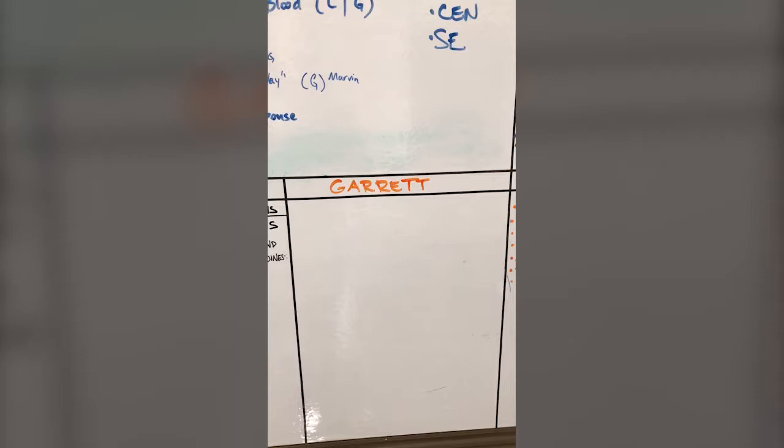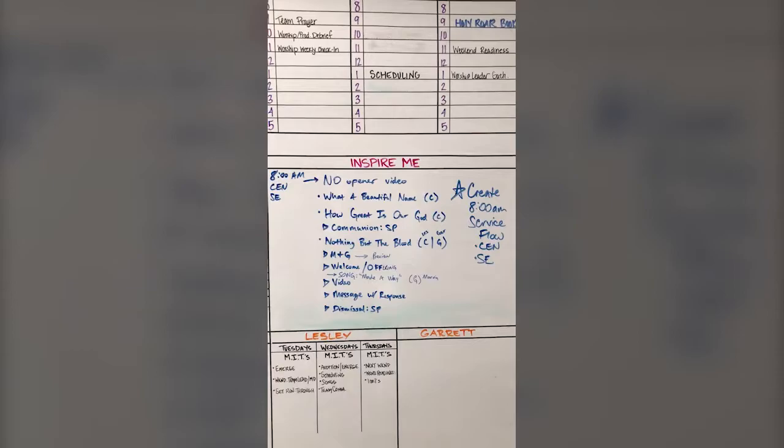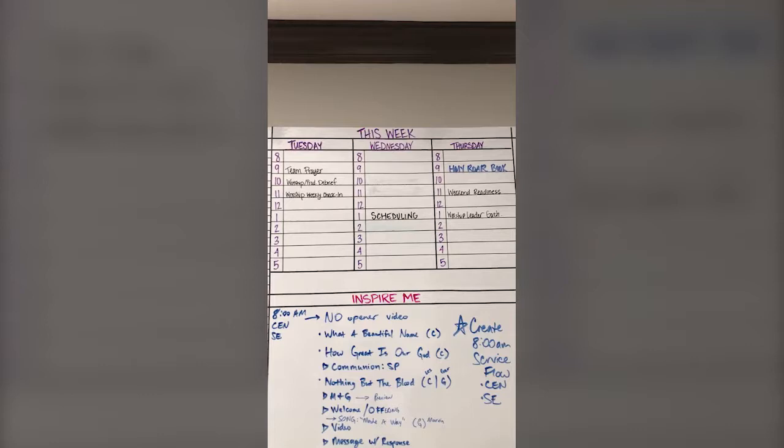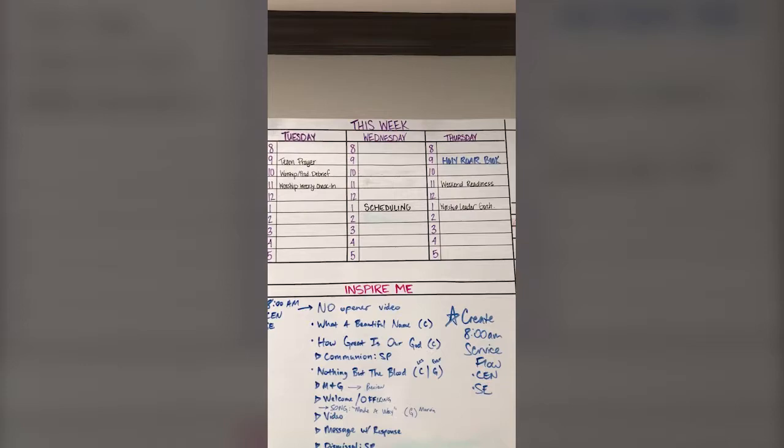Inspire Me: these are songs and ideas, things that we can do. This week — what we need to do each week: Tuesday, what are the things we have to do? Wednesday, what do we have to do? Thursday, what should we be doing? As you can see, weekend readiness at 11 a.m. — that's where they are right now.